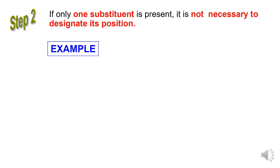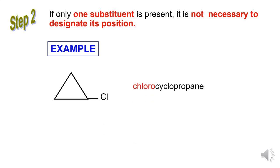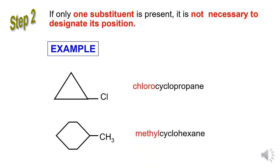Step 2: If only one substituent is present, it is not necessary to designate its position. Example 1: the parent name is cyclopropane, bonded to one substituent group which is Cl, so the IUPAC name is chlorocyclopropane. Example 2: the parent name is cyclohexane, bonded to one substituent group which is CH3, so the IUPAC name is methylcyclohexane.